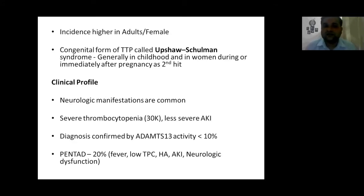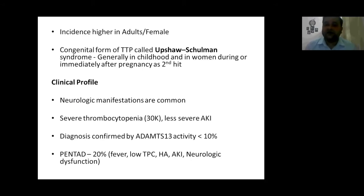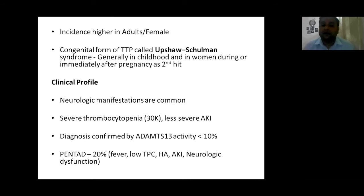The incidence of TTP is higher in adults and more commonly seen in females. The congenital form is called Upshaw-Schulman syndrome, generally seen in childhood and may present in adulthood with a second genetic hit, such as pregnancy. Clinical profile includes anemia, and the most common manifestation is neurological — like altered sensorium or seizures. There can be severe thrombocytopenia as low as 30,000, with less severe AKI compared to hemolytic uremic syndrome. Diagnosis is confirmed by ADAMTS-13 activity less than 10%. There is a classic pentad of fever, low platelet count, hemolytic anemia, acute kidney injury, and neurological dysfunction, but it is seen in only 20% of cases.